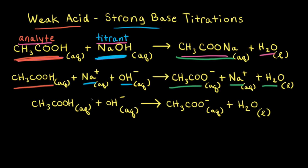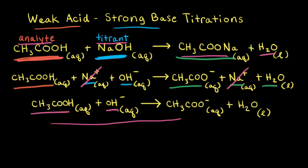For our net ionic equation, we leave out spectator ions. Since sodium cations appear on both the left and right side, when we remove those, we're left with the net ionic equation: acetic acid reacts with hydroxide anions to form the acetate anion and water.